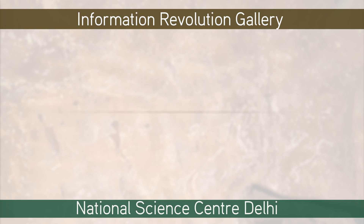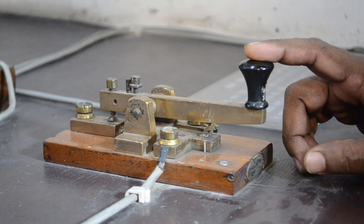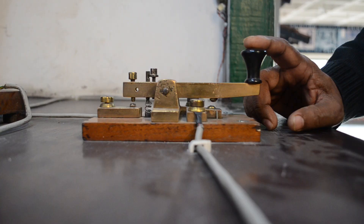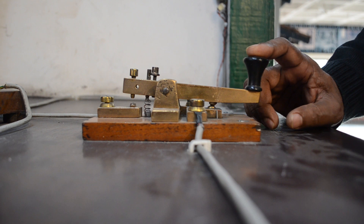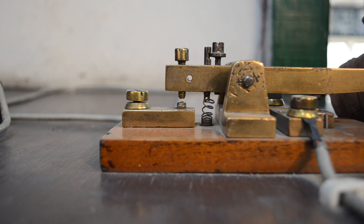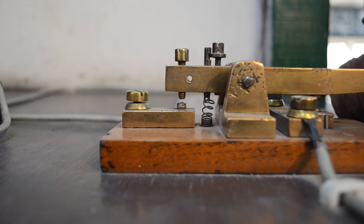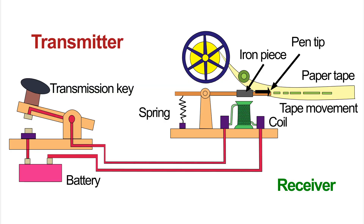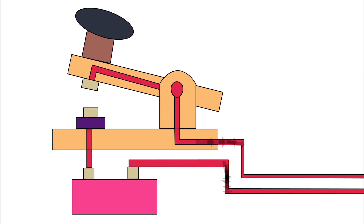Morse code. Press and release the key a few times and listen to the sound. Each Morse code symbol represents a text character — that means a letter or numeral — and is represented by a unique sequence of dots and dashes. Using a series of on-off tones, the message is transmitted.